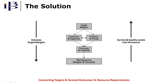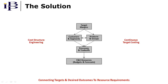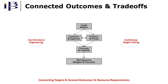The process determines target service levels and cost structures that support desired volumes, revenues, and margins. Cost structure engineering and continuous target costing are terms that describe this approach. Target costing is not a new idea — what's new here is that the approach is embedded into a continuous planning and performance management process. The term used to describe this approach is called connected outcomes and trade-offs.